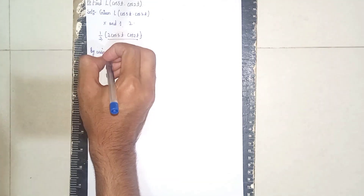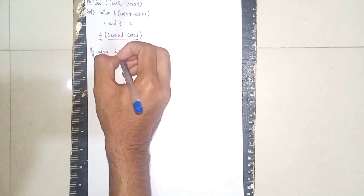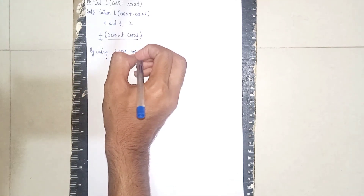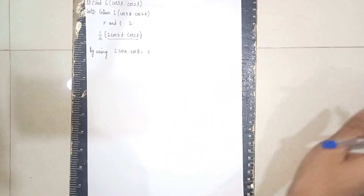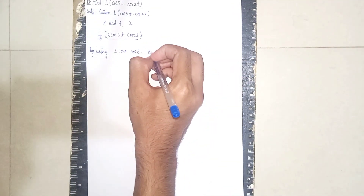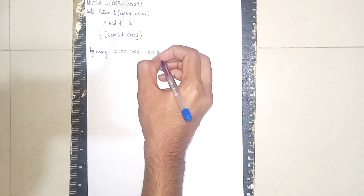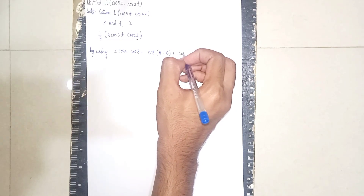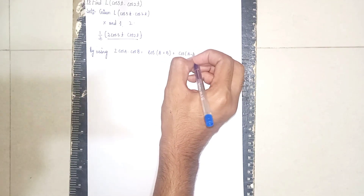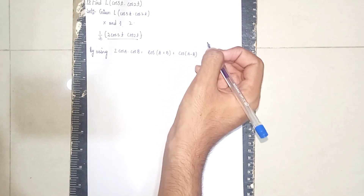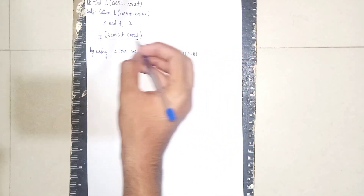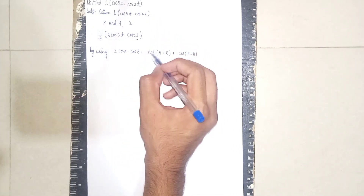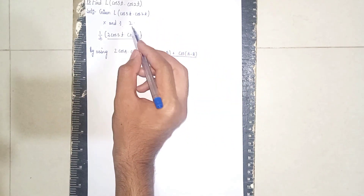Now we use the algebra identity: 2·cos(A)·cos(B) = cos(A+B) + cos(A−B). This is the standard algebraic form. Instead of cos(7t)·cos(2t), we rewrite using this identity — that's why I'm multiplying by 2 to get this form.